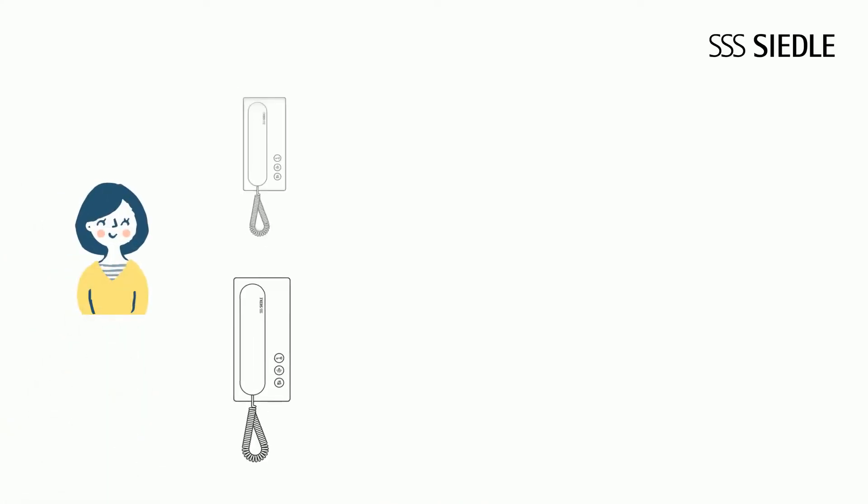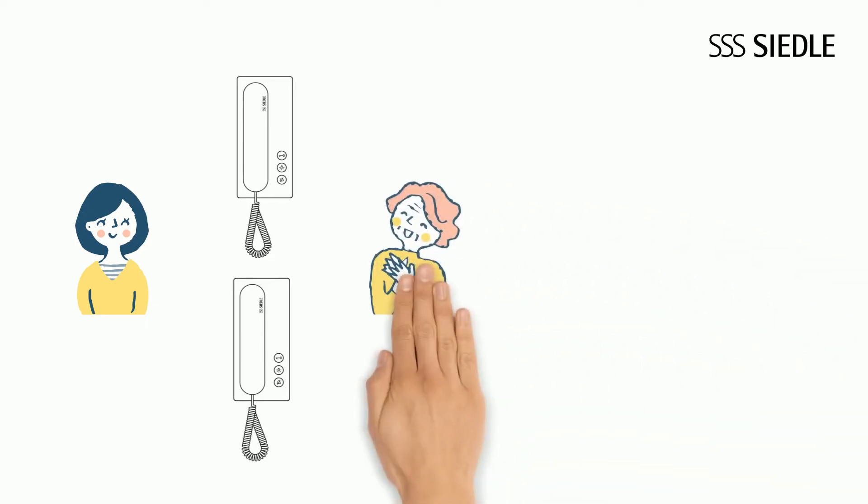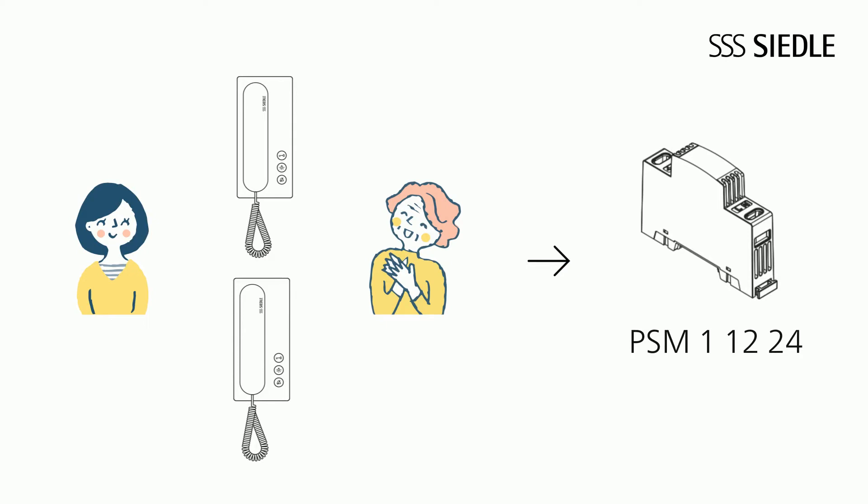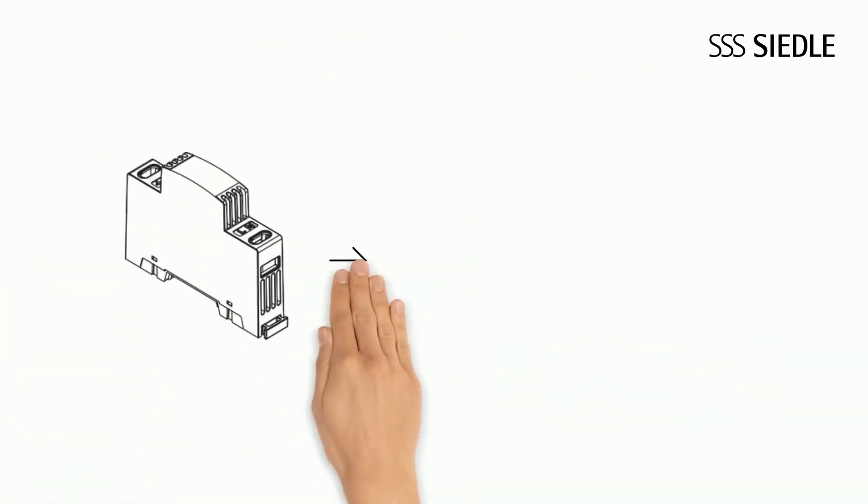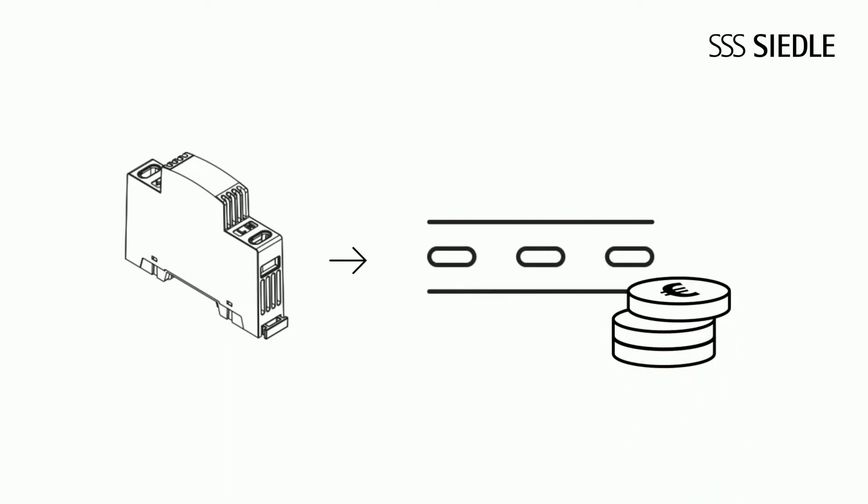Bridget has installed two IQ in-house telephones. One in the kitchen on the ground floor and the other at grandma's in the granny annex. Both are powered by the PSM network device. The practical thing about it, this network device only needs one splitter in the control cabinet and does not cost a lot.